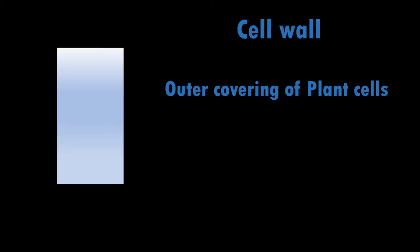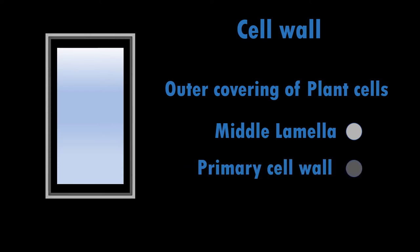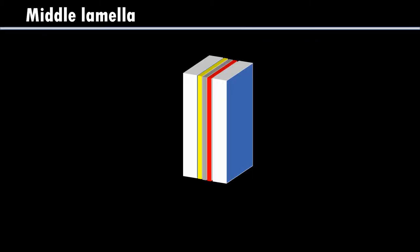Hello students, in today's class we will be studying about the cell wall. Cell wall is a main component in plants. Cell wall is actually the outer covering of the plant cells, and it has three very important components, namely middle lamella, primary cell wall, and secondary cell wall.